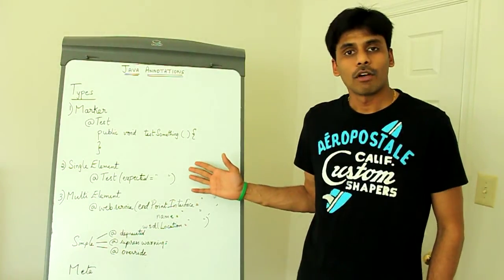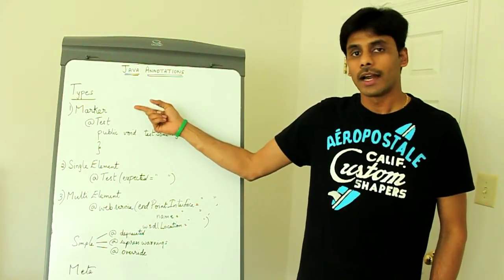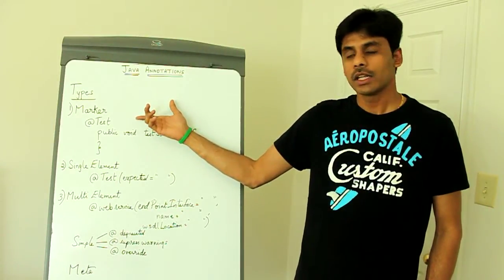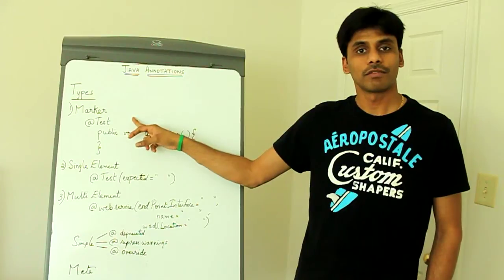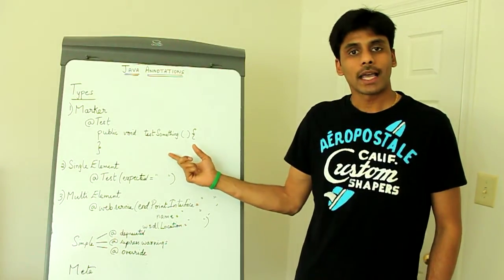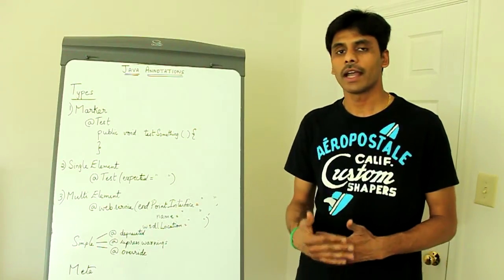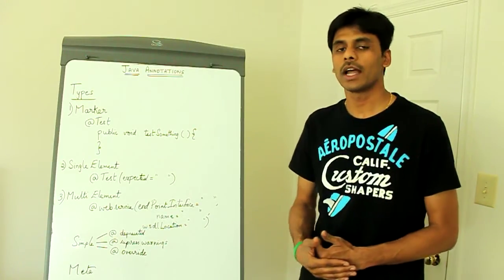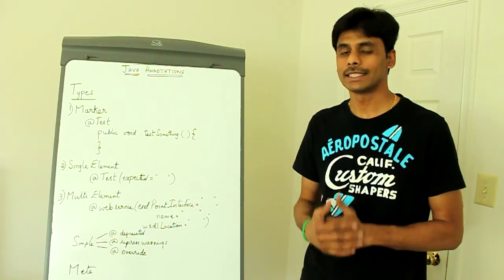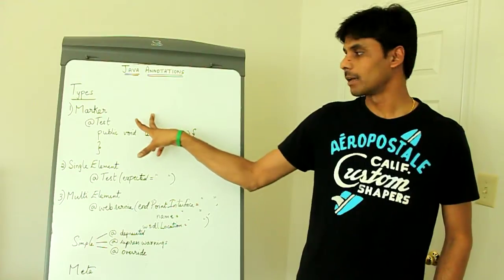Java offers three types of annotations. First one is the marker annotation, and a good example is the at test annotation from the JUnit framework. So as soon as you mark a method with the at test annotation, as I have mentioned, JUnit framework at runtime will look at this annotation and figure out that it is a test method. The marker annotations don't have any parameters.